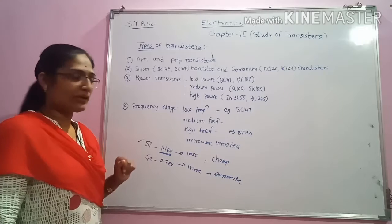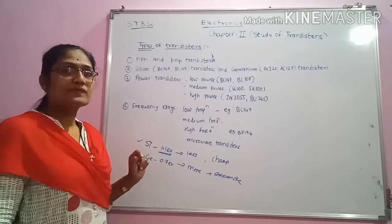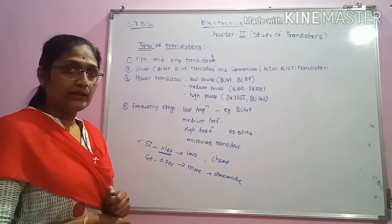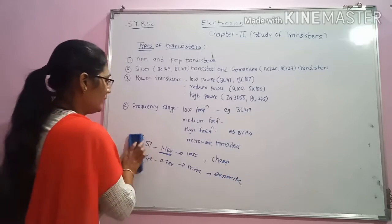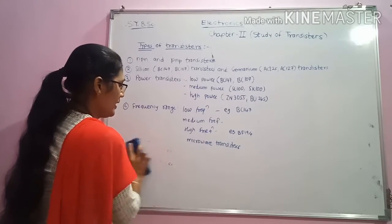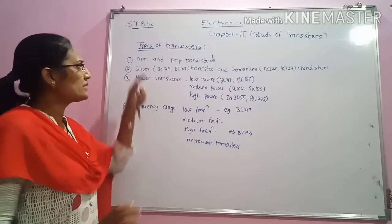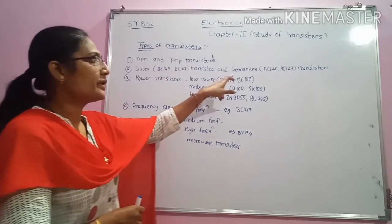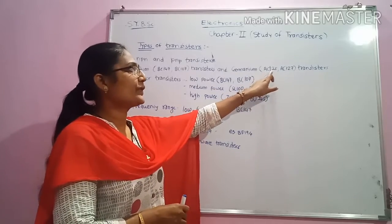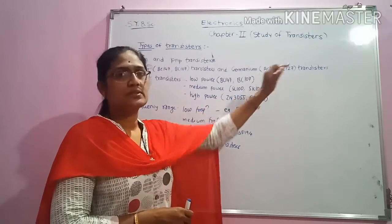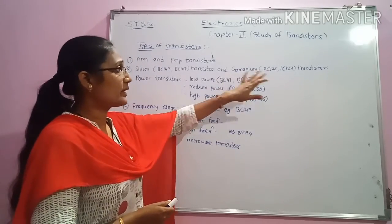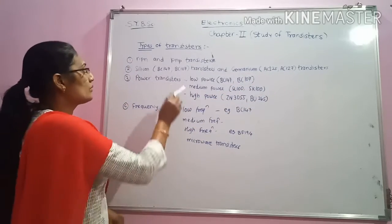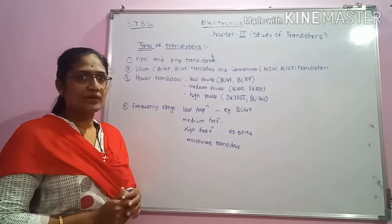Most of the transistors are made up of silicon due to less leakage current and being cheaper in cost. The examples of silicon-based transistors are BC147 and BC107, and the germanium transistor examples are AC125 and AC127. In order to denote a transistor made up of germanium, the 'AC' prefix is used, and in case of transistors made up of silicon, the 'BC' prefix is used.